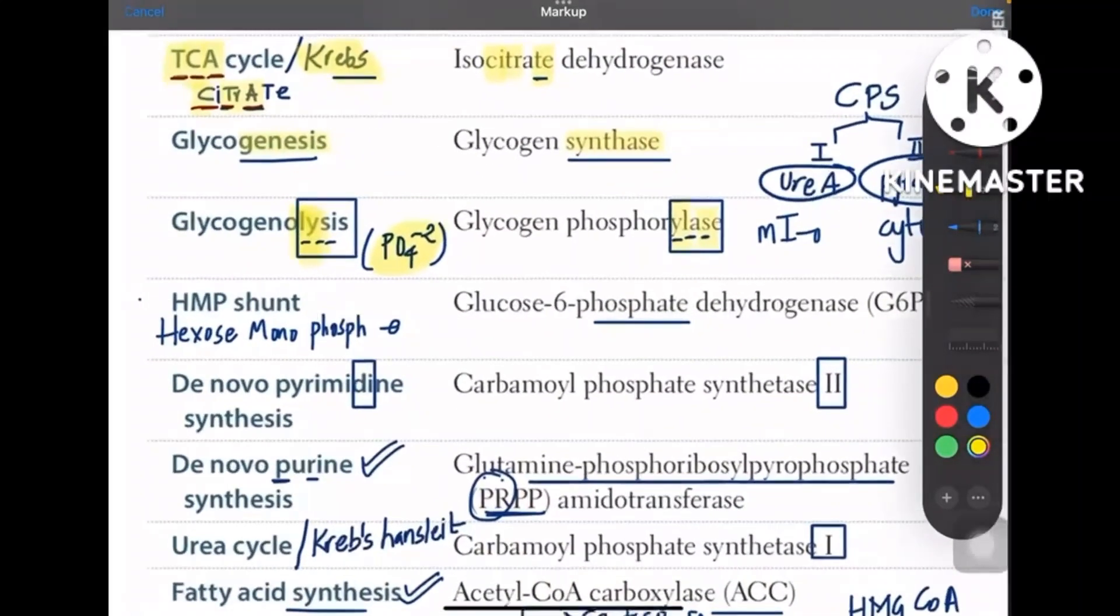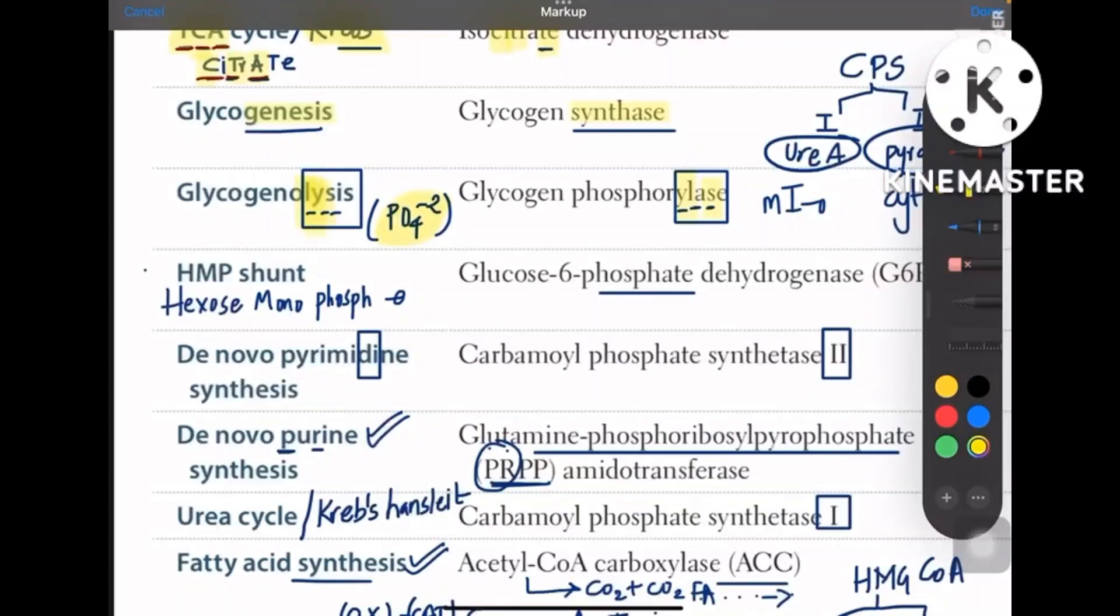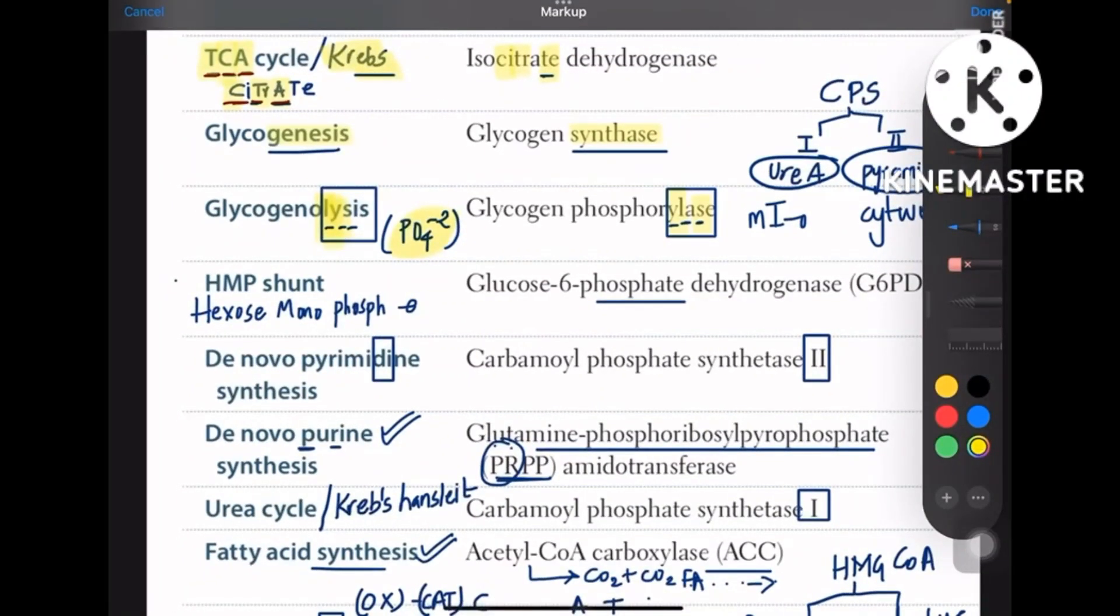And coming to HMP shunt pathway guys, you have hexose monophosphate, right? So in hexose monophosphate you have hexose that means 6, and phosphate. So glucose-6-phosphate dehydrogenase is involved in HMP shunt pathway, which is important for NADPH generation. Remember that point.